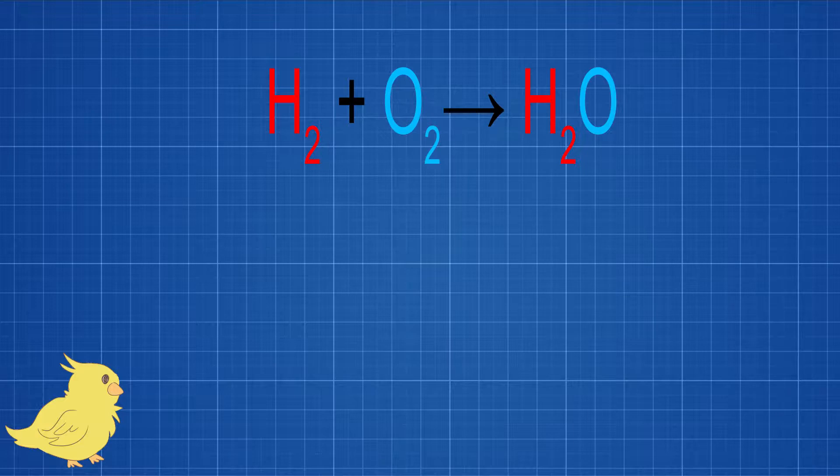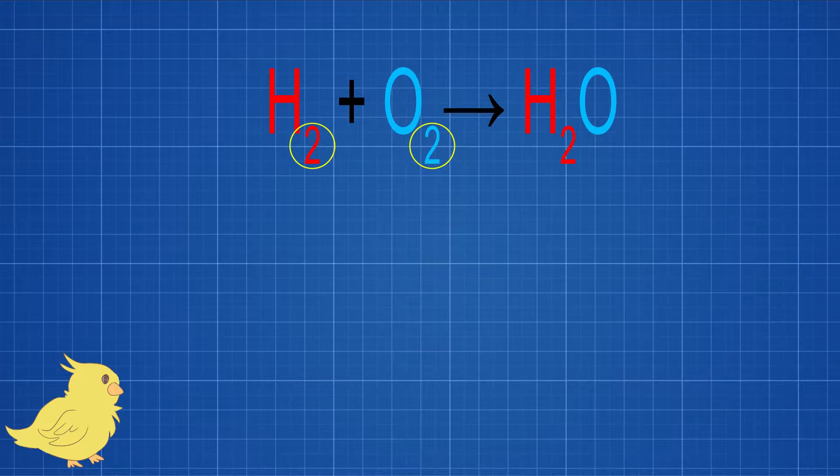The first example we're going to do is the reaction between hydrogen and oxygen to form water. So first we're going to write out our symbol equation. Remember, hydrogen is molecules of hydrogen. That means that hydrogen comes in pairs of atoms. Same with oxygen.